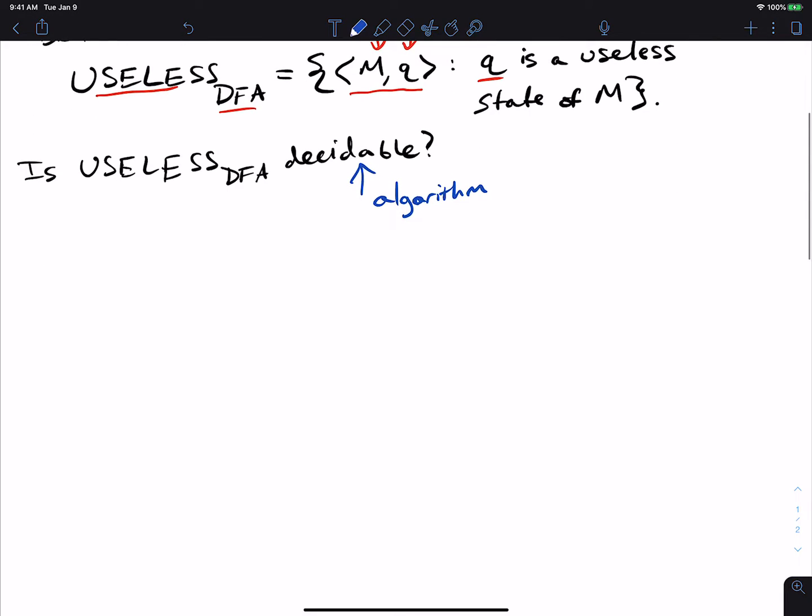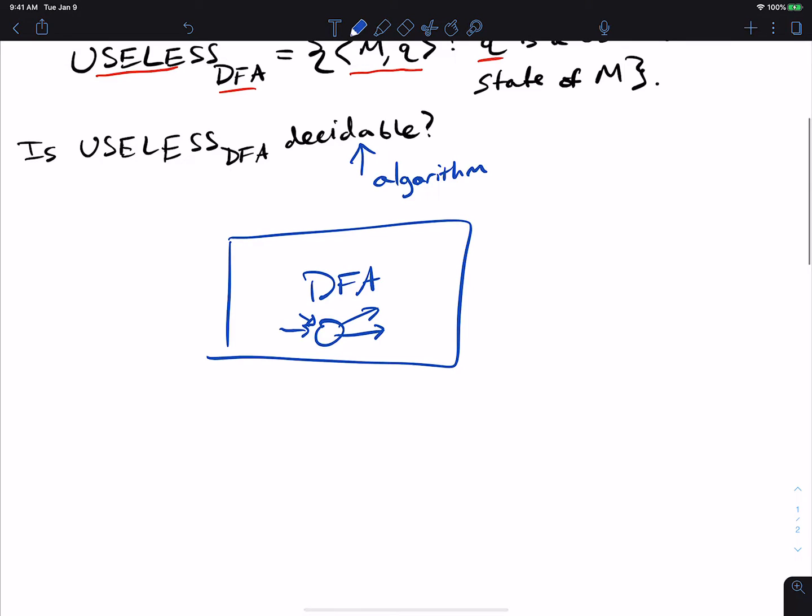Let's say that there is a useless state in this machine. So here's a DFA, and we have some number of transitions maybe coming into it. We have a useless state here and it has some outgoing transitions. So we want to figure out whether this state is a useless one. How can we actually do that?